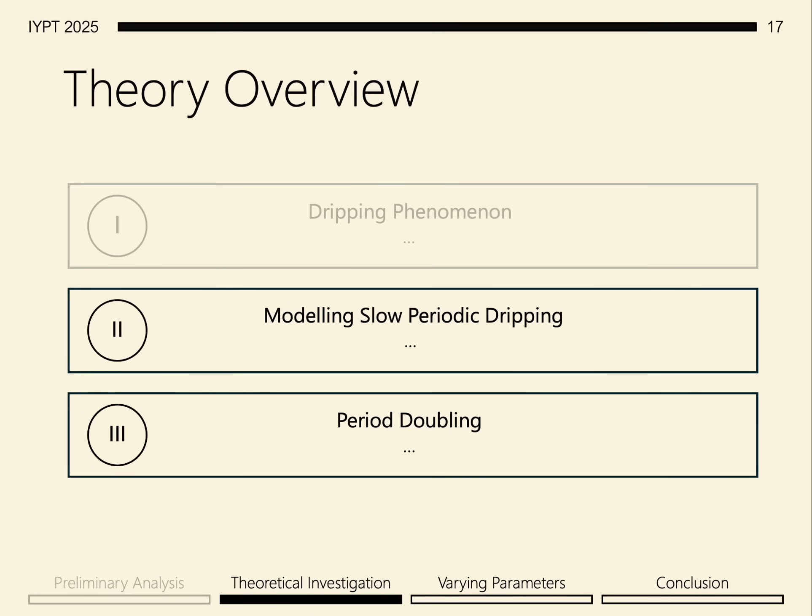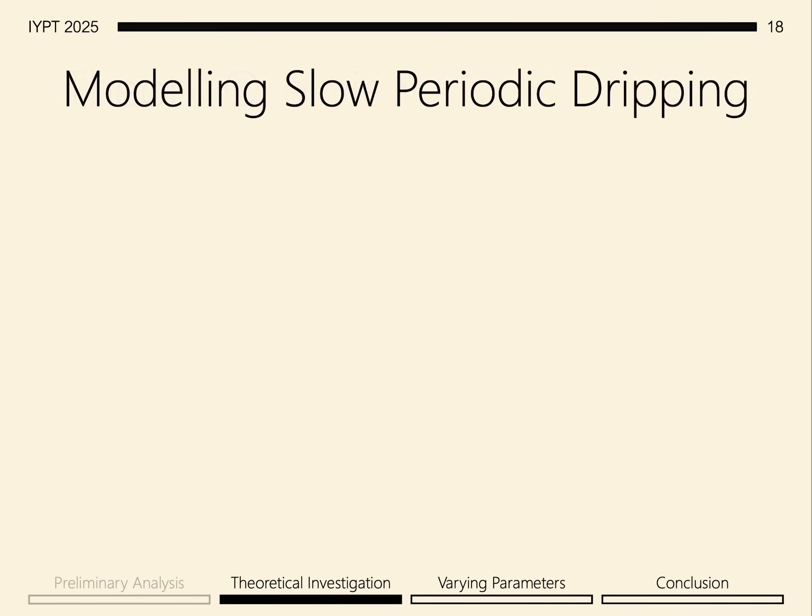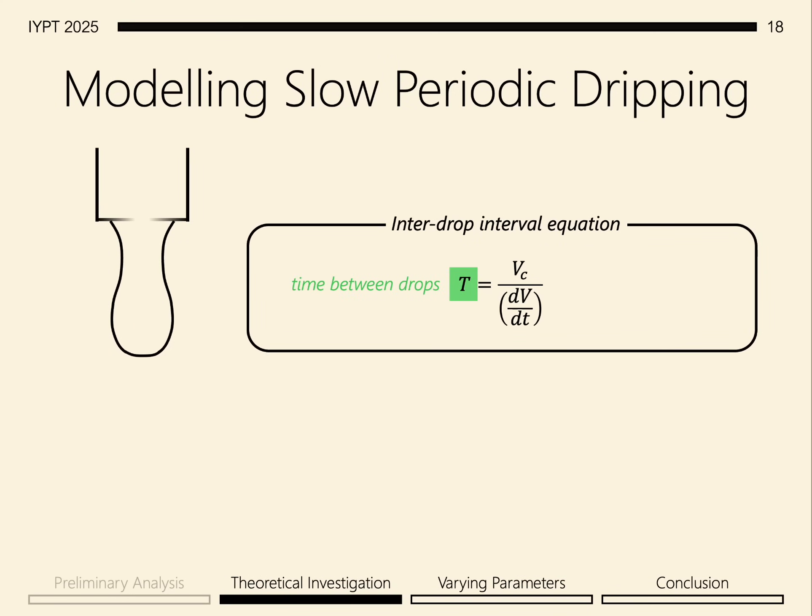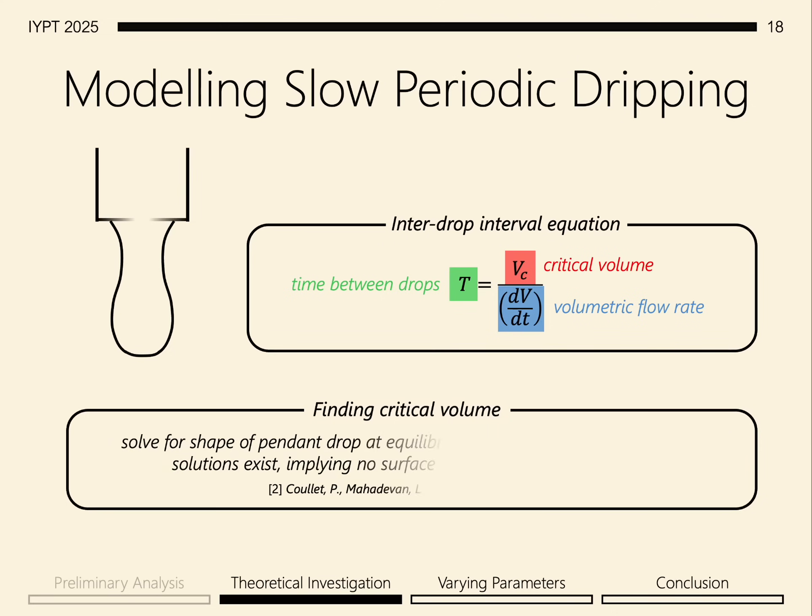So now let's model the slow periodic dripping. We can simply model the time between drops for slow periodic dripping by realizing that for known volumetric flow rates, there is always a critical volume at which the drop begins to fall, where the force of gravity is no longer balanced by surface tension. To find the critical volume, we can numerically solve for the shape of a pendant drop at equilibrium of increasing volume until no solutions exist, implying no surface tension can balance the weight force.